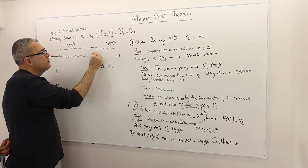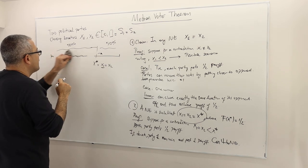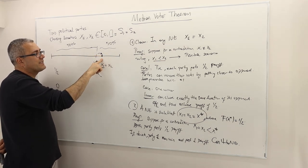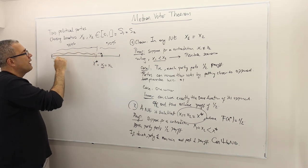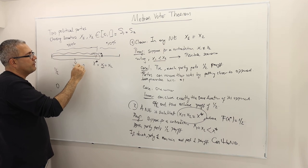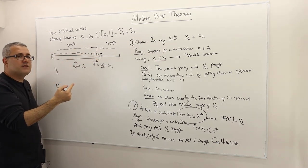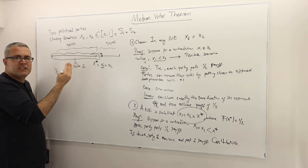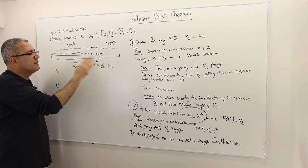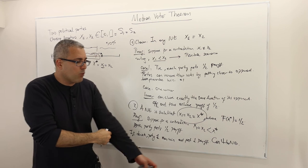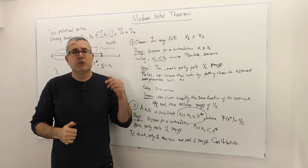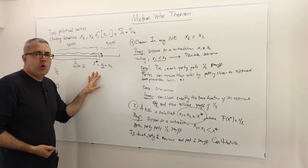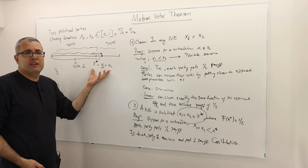What if party 1 deviates to the right — toward more conservative policies? Once again, if political party 1 selects a position to the right of x star, all those voters on the left plus half of the middle go to party 2, which is more than 50%, meaning party 1 also loses in this case. So deviating away from the median voter — either left or right — causes you to lose the election, which you do not want. Therefore political party 1, and symmetrically party 2, will not regret this outcome.